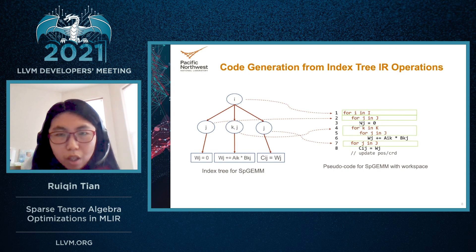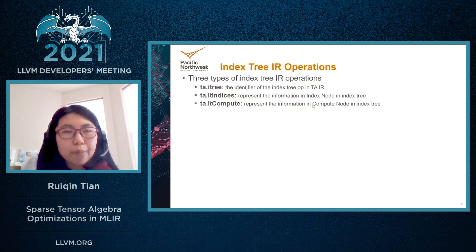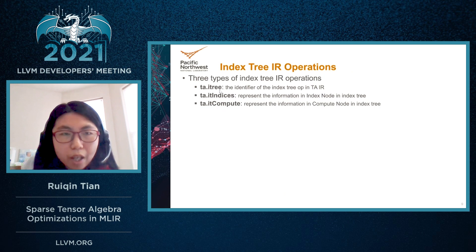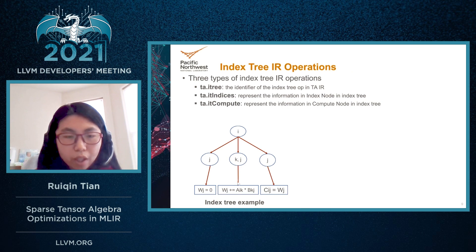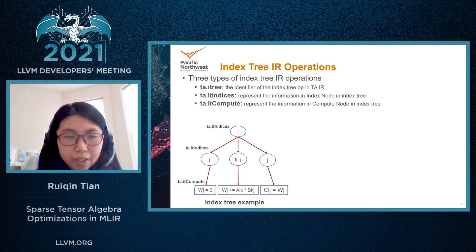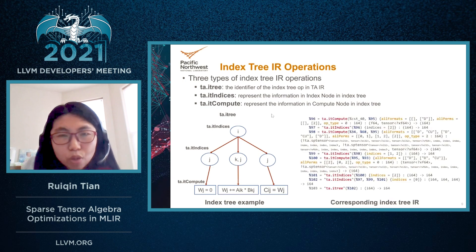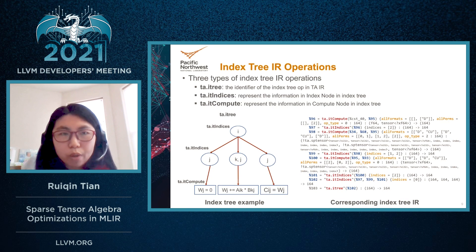To represent the index tree in our compiler, we create Index Tree IR operations. There are three types: the IT operation, which is the identifier of the index tree in the Tensor IR; the IT-Indices operation, which represents information in the index node; and the IT-Compute operation, which represents information in the compute node. For the index tree example, the index nodes are represented with IT-Indices operations, the compute nodes with IT-Compute operations, and finally the IT operation identifies the entire index tree.